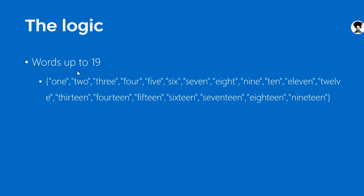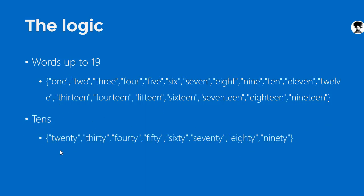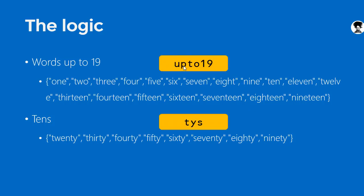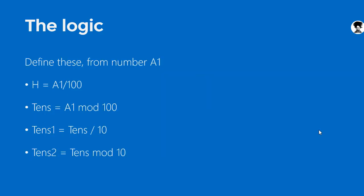Let's first understand the logic for creating words from a number. We start by assuming there are two arrays. One array gives the words for numbers up to 19, because in English and many other languages there are special words for numbers 1 to 19. Then another array called 'ties' has seven elements: 20, 30, 40, 50, 60, 80, 90 — the 'ty' forms. Assuming a number is in cell A1, we derive four extra values from it.